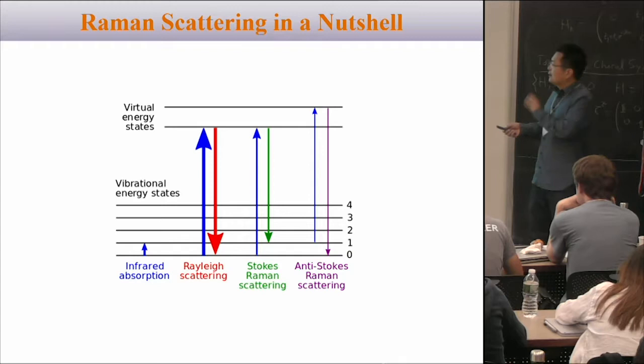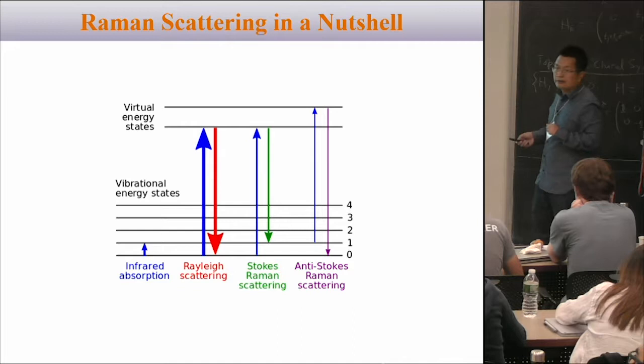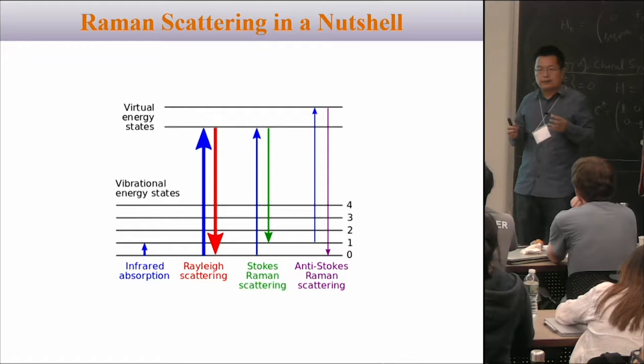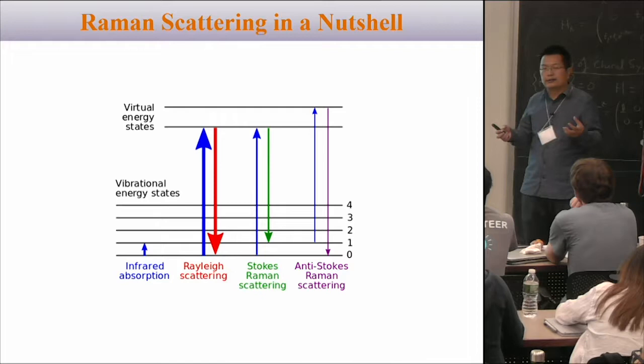So we have mainly three processes: infrared absorption, Stokes Raman scattering, and anti-Stokes. For each process there are particular Raman optical selection rules that depend on the symmetry of the crystal and the particular oscillations.